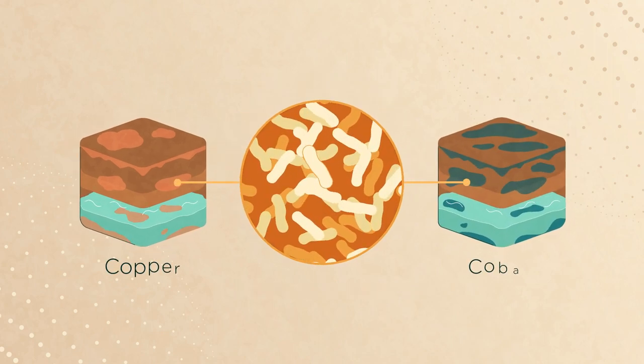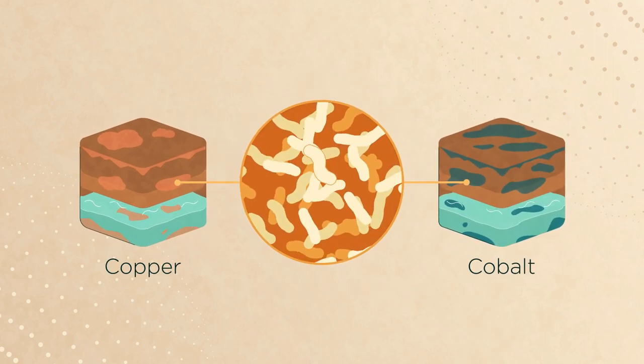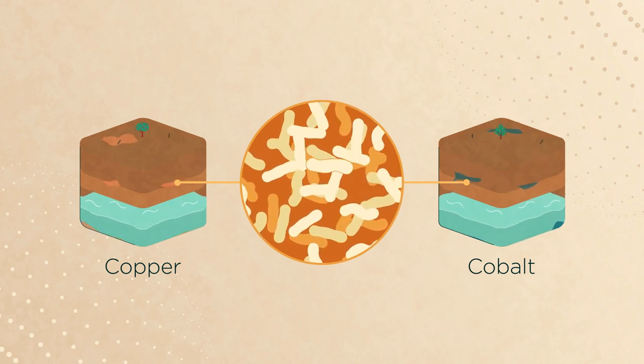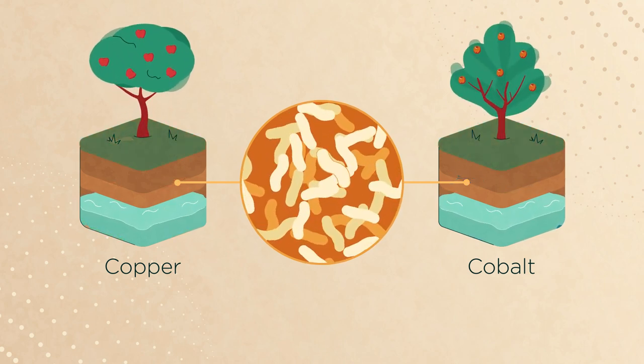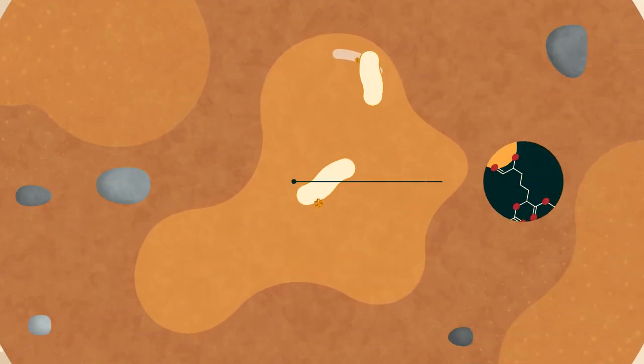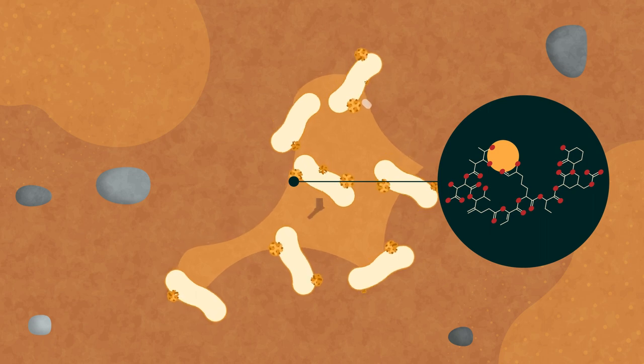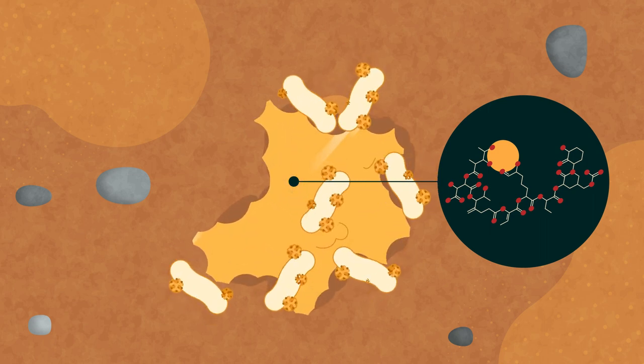Delftia has been found in numerous environments and can thrive in habitats containing high concentrations of often toxic metals, such as copper and cobalt. How does Delftia do this? Well, Delftia acidovorans produces a small protein that allows it to avoid toxicity from gold by precipitating it out of solution.